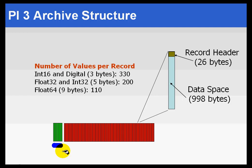Let's say you had a 10,000 tag system. With a 10,000 tag system, if you use the algorithm of 10 to 100K per tag, that ends up being, at a minimum, a 100MB archive. With a 100MB archive, that's 100,000,000 bytes — that's actually 100,000 1K records.